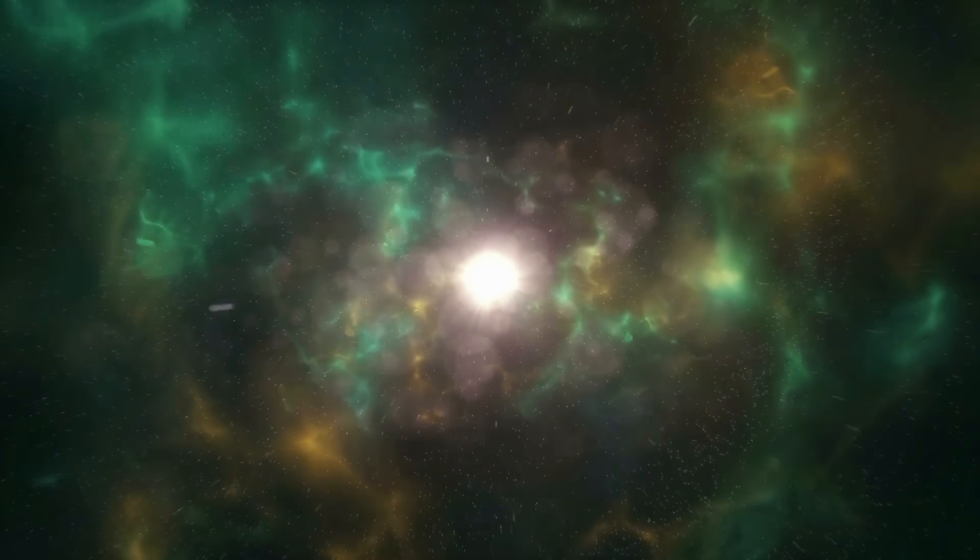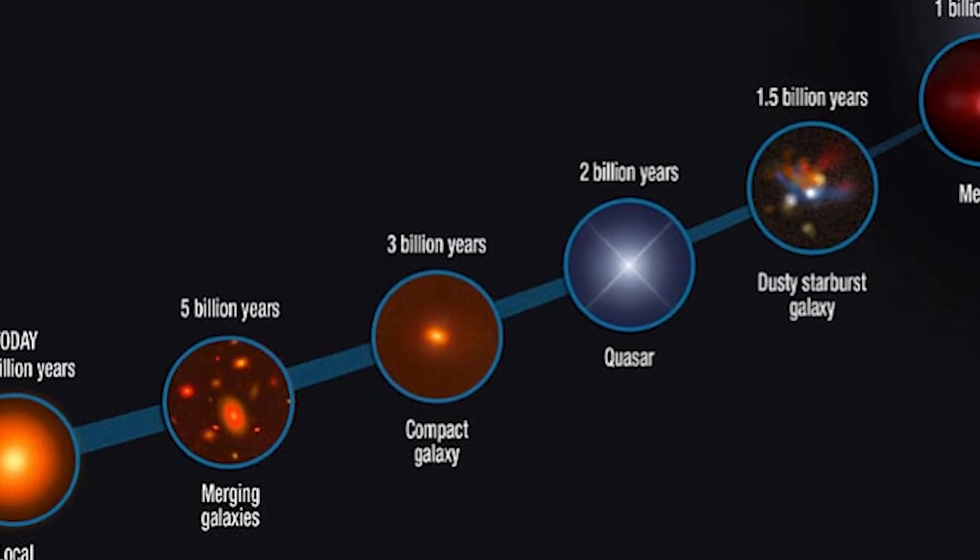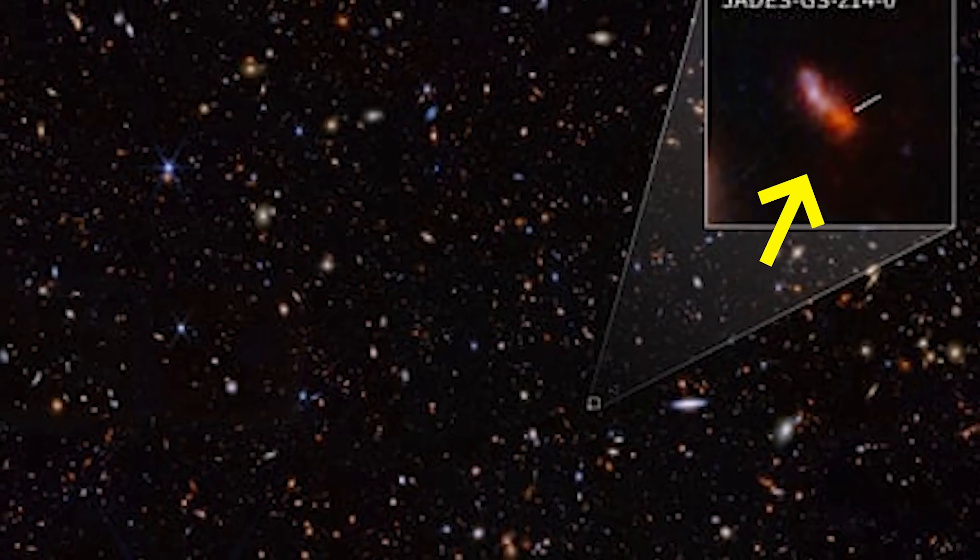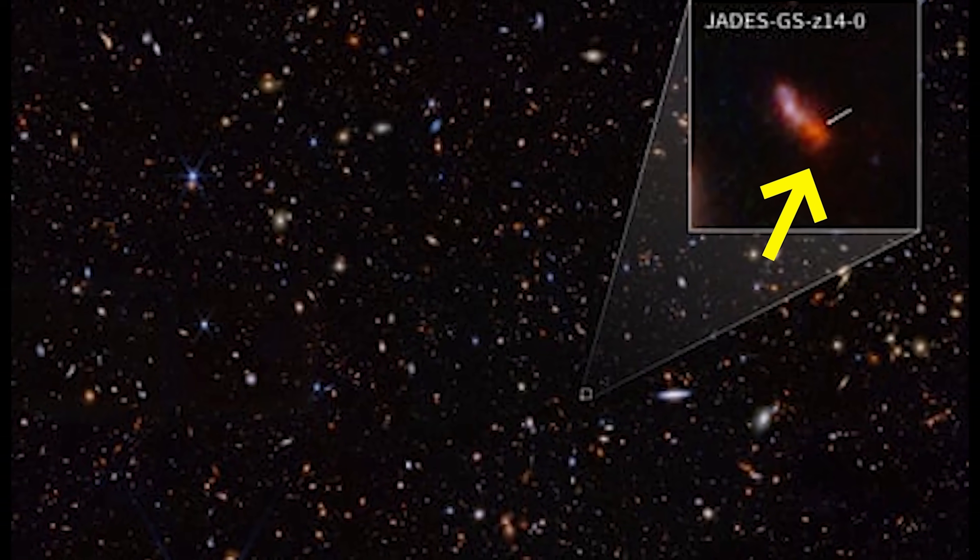Using photometry, measuring light intensity through a few broad filters, Webb estimates the redshift and age of these ancient galaxies. Remarkably, Webb has detected galaxies older than previously known, some dating back only a few hundred million years after the Big Bang.